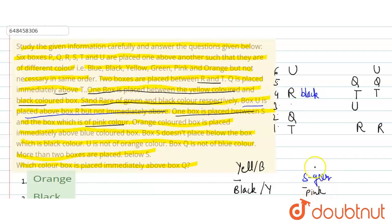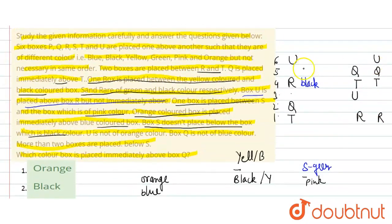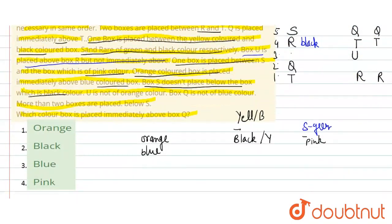The orange color box immediately above the blue color box — that means यह लगातार होंगे (they will be consecutive). Then box S does not placed below black color, तो black से नीचे S नहीं आएगा (S will not come below black). In this case R is black color, so S can go above R.